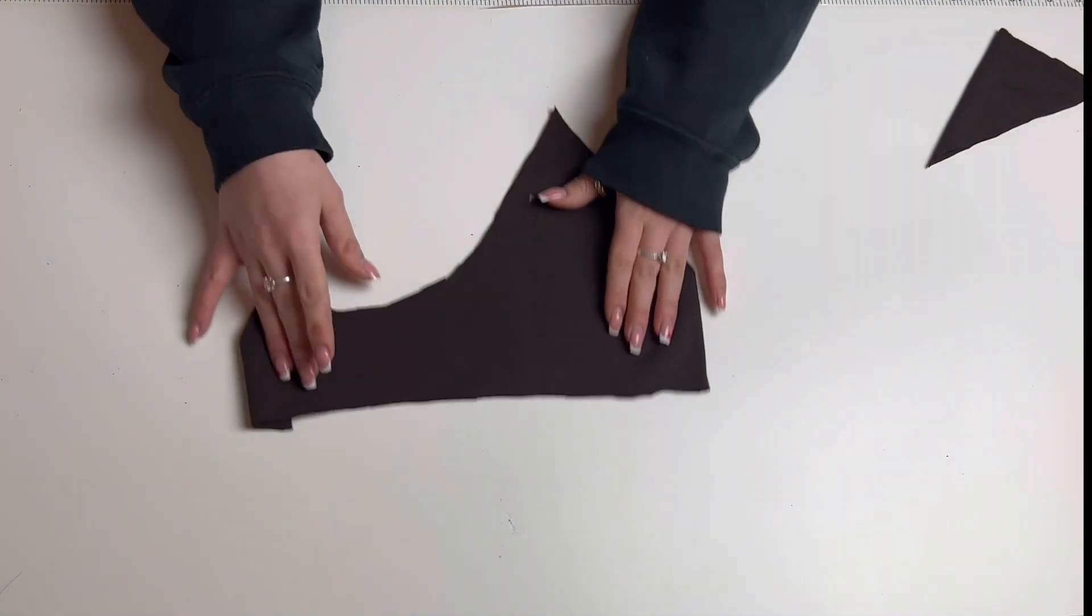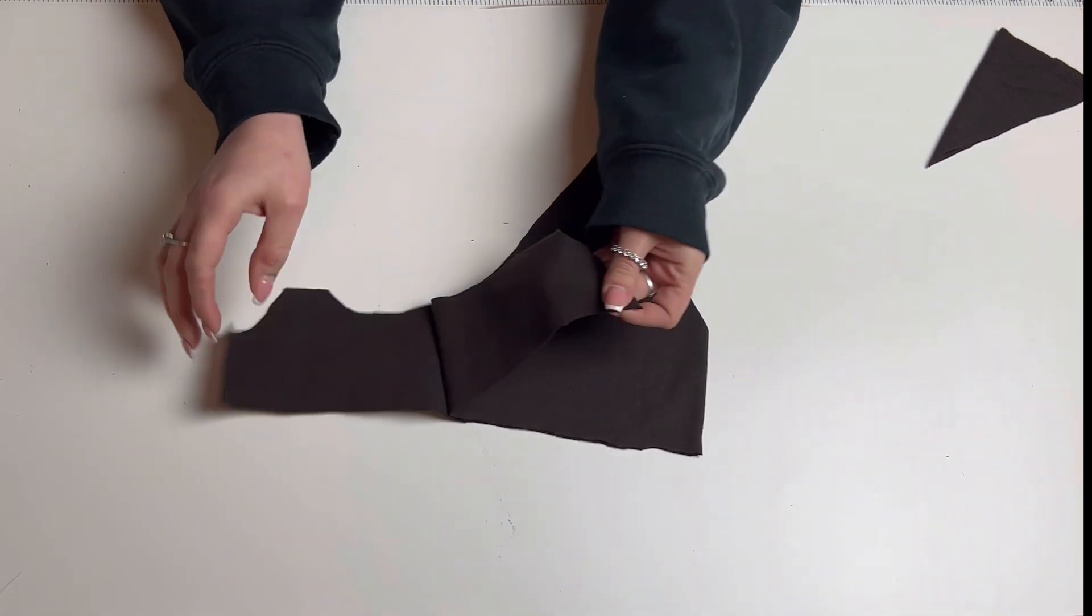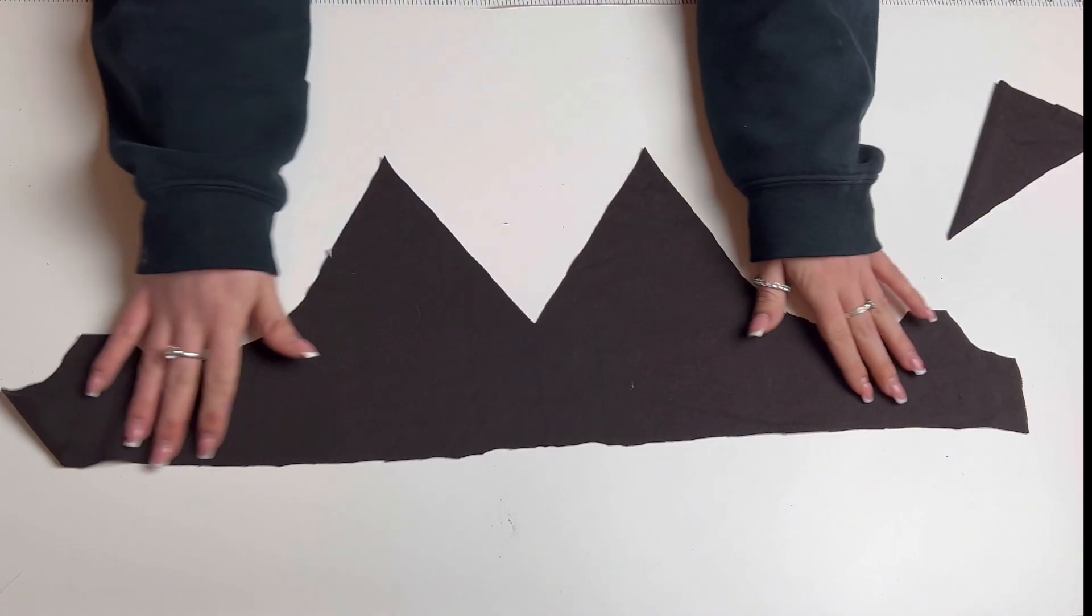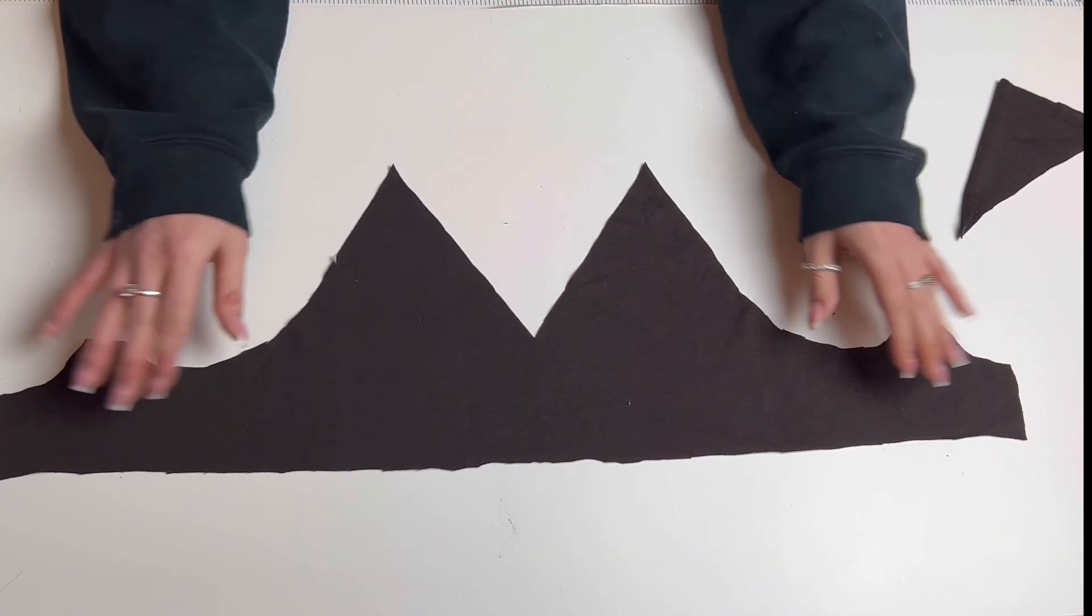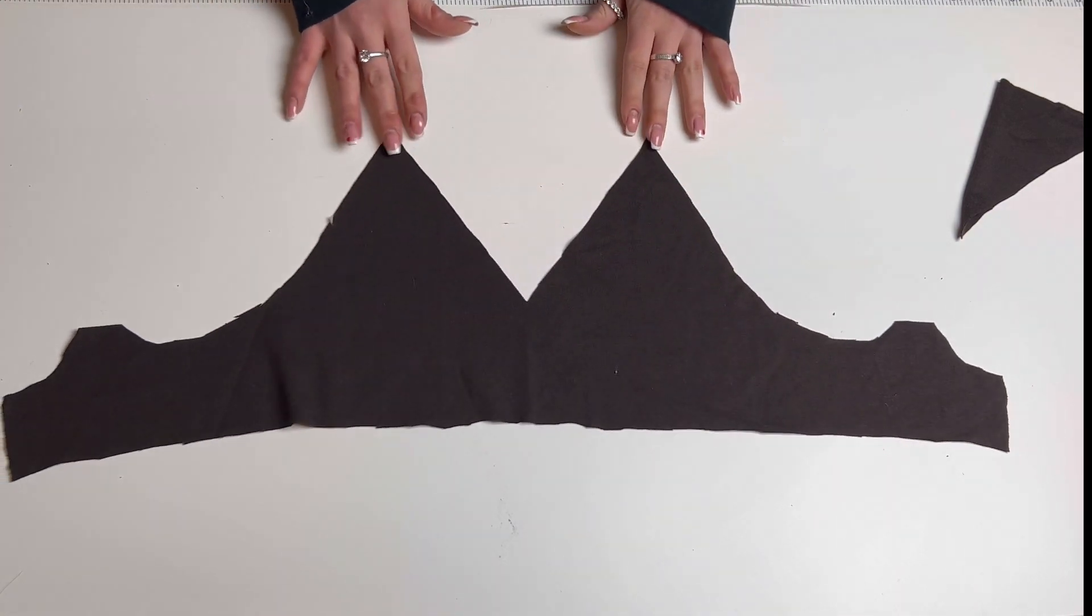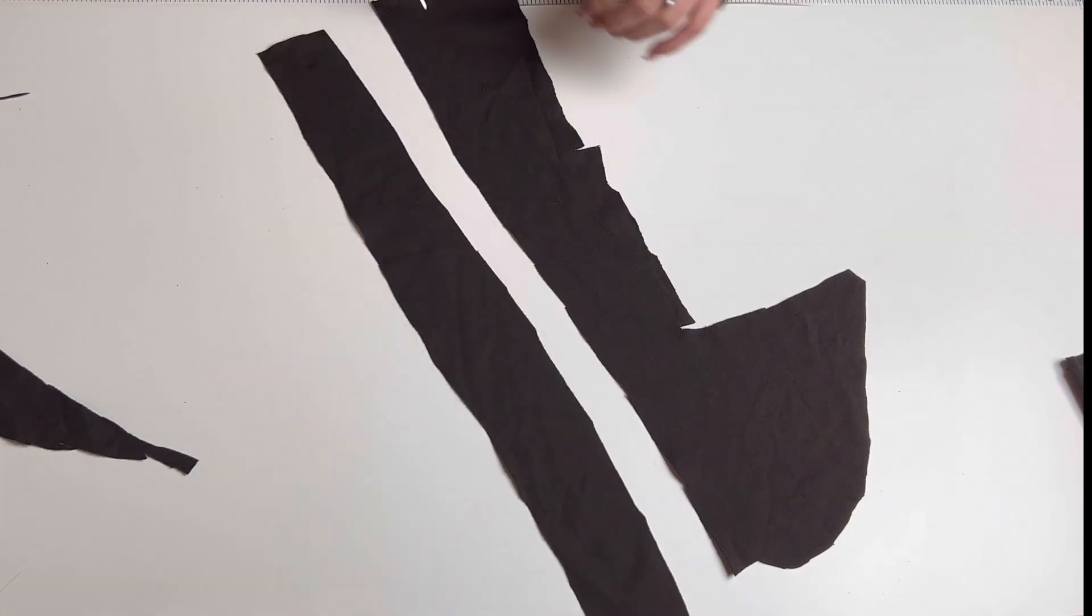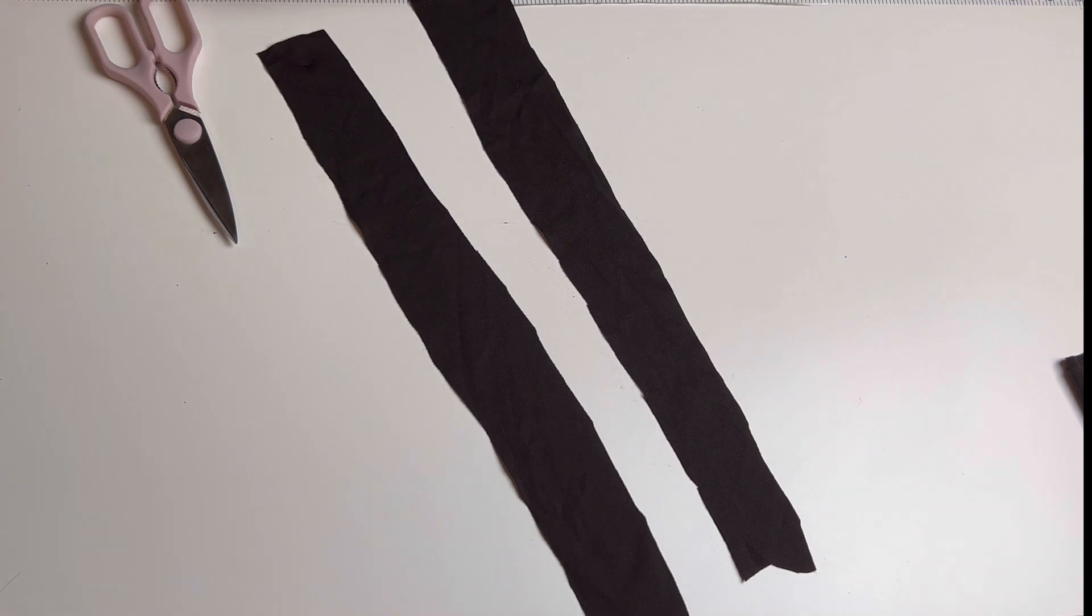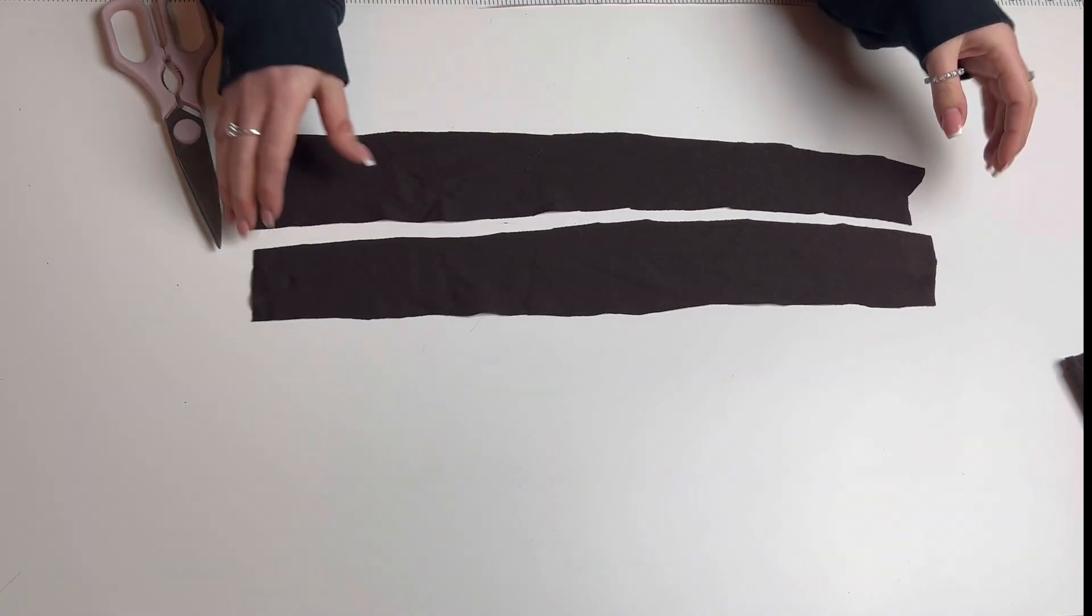Now you should have one main bralette piece. Now with some scrap fabric, cut two strips that are about one inch wide. These will be our straps.